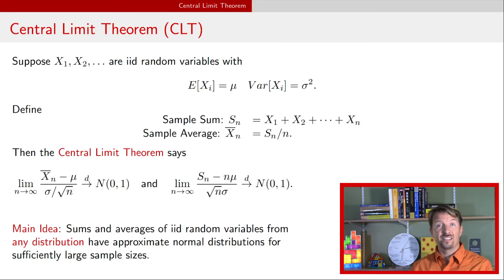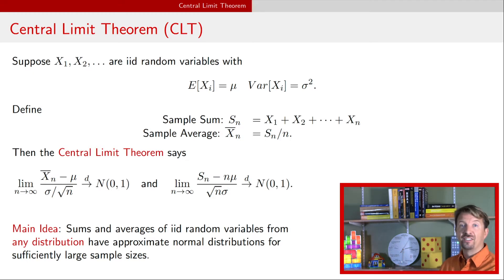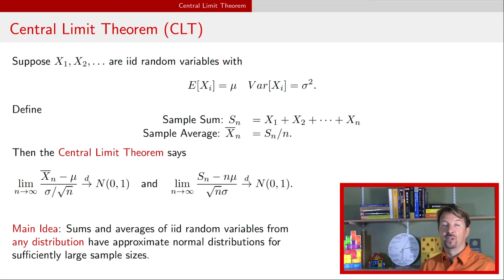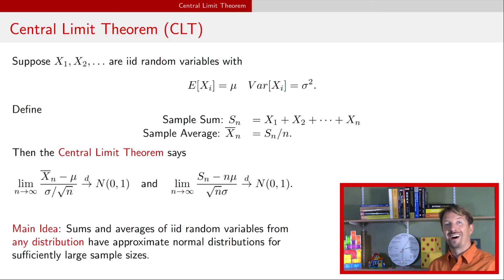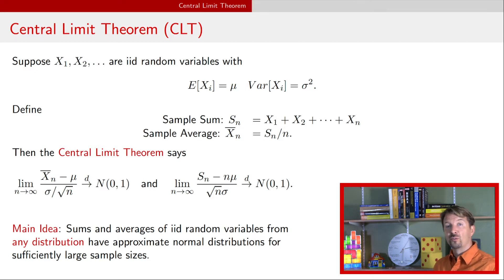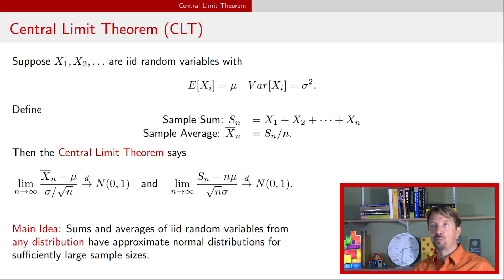In the previous video, we defined the central limit theorem and ended on this slide right here, which shows the ways in which the sample average and the sample sum can converge to a normal distribution. For now, what we're talking about with the central limit theorem involves iid random variables — those are independent and identically distributed. And because they're identically distributed, each of the individual random variables has a common expectation mu and a common variance sigma squared. So now this particular video is going to talk about how do we actually use this central limit theorem in practice.